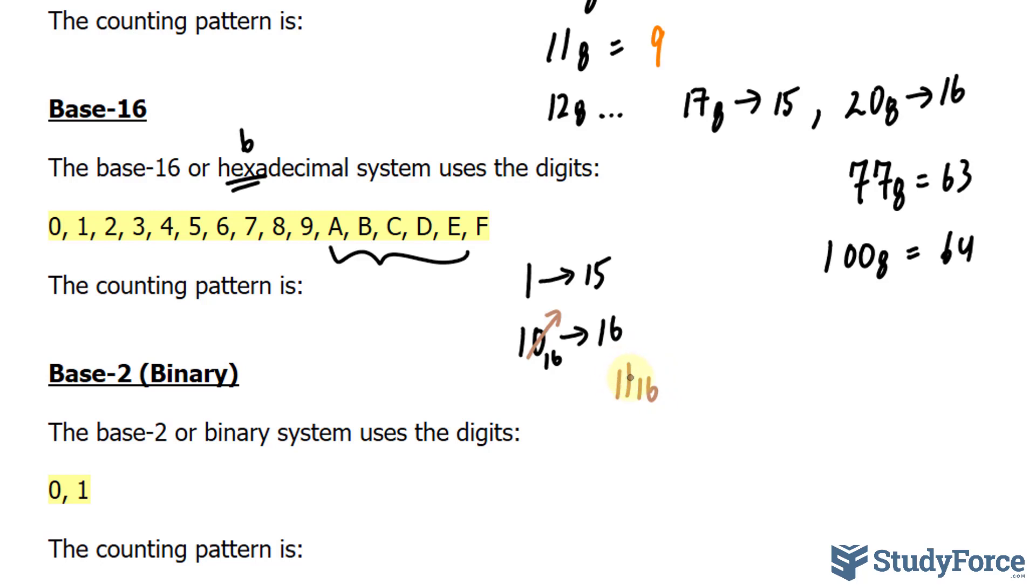And once we've reached 1f, sub 16, which is equal to, let's do the math, 1 times 16 raised to the power of 1 plus f times 16 raised to the power of 0, we have 16 plus 15, and that's 31. So after 31, if we want to write down, let's say 32, that would change to 2, and the process would reset.